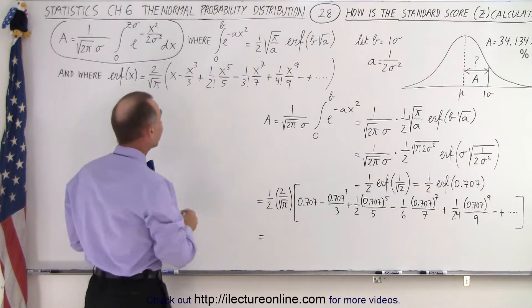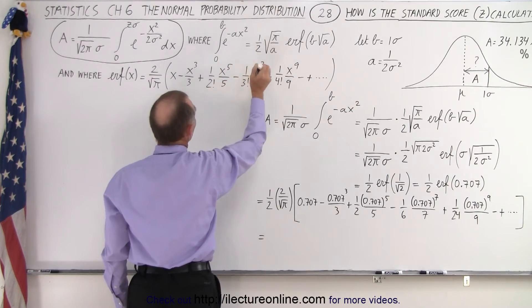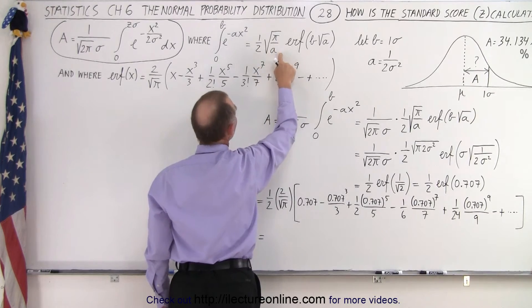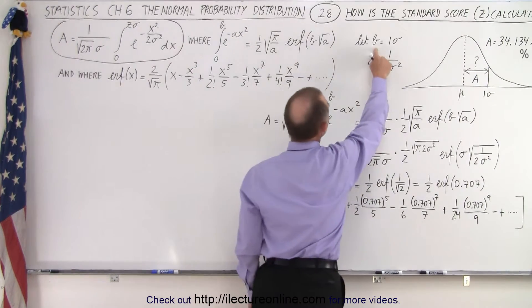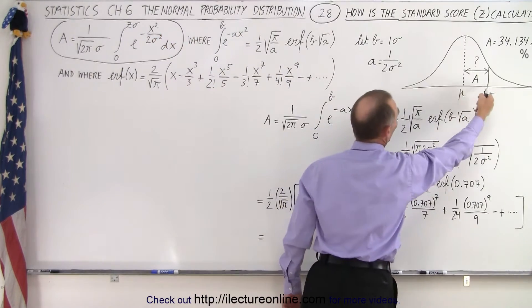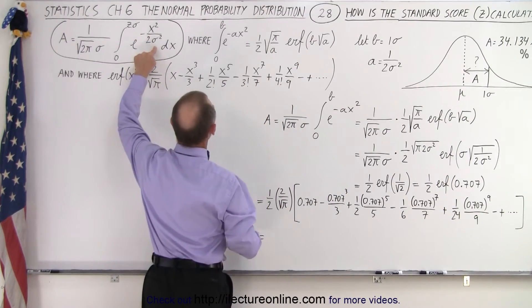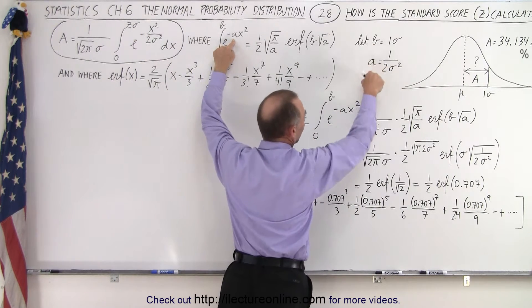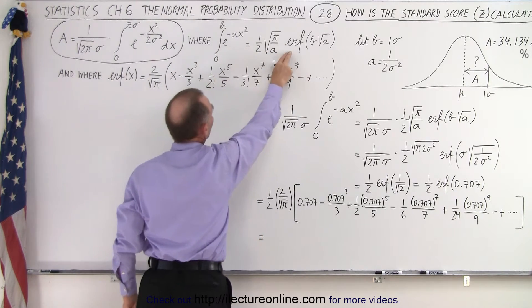Now it turns out that the integral from 0 to b, b being any number, of e to the minus ax squared, can be defined as 1 half times the square root of π over a times the error function of b times the square root of a. Now in this case, b is going to be 1σ, because that's the limit, the limit is going to be from 0 to 1σ. And a is 1 over 2σ squared, because if you replace 1 over 2σ squared by a, you get this relationship right here. So now we have a relationship for a and b in this general equation. So we know that the integral of this equals that.